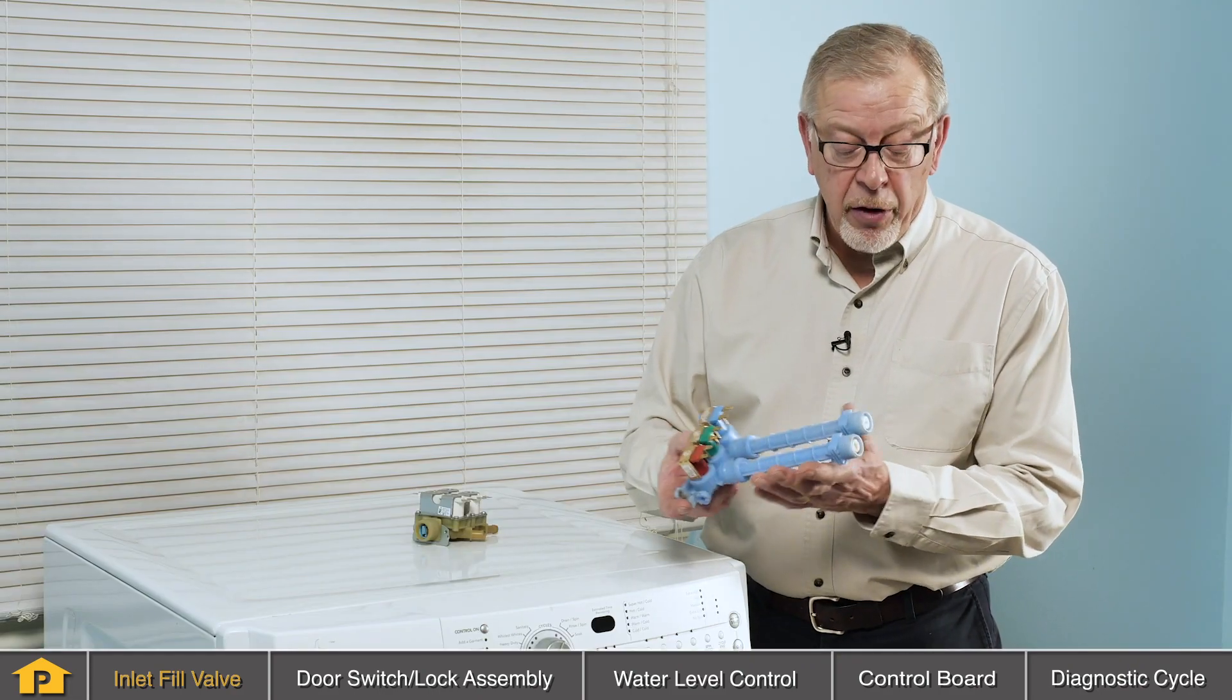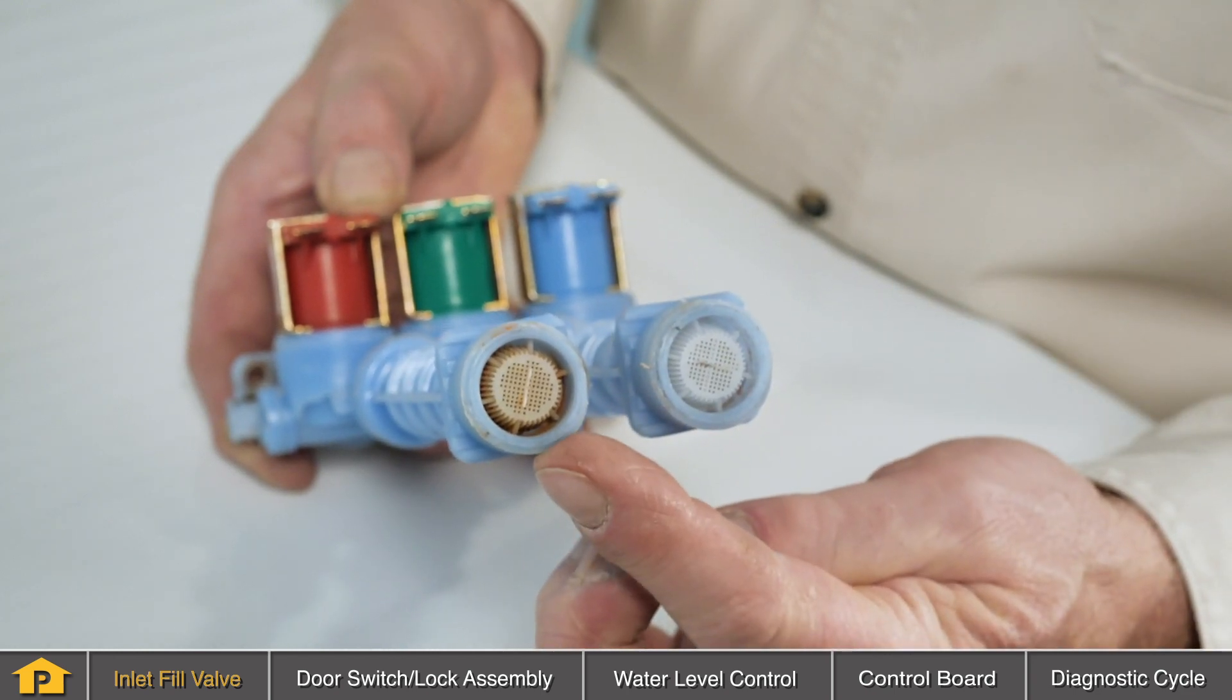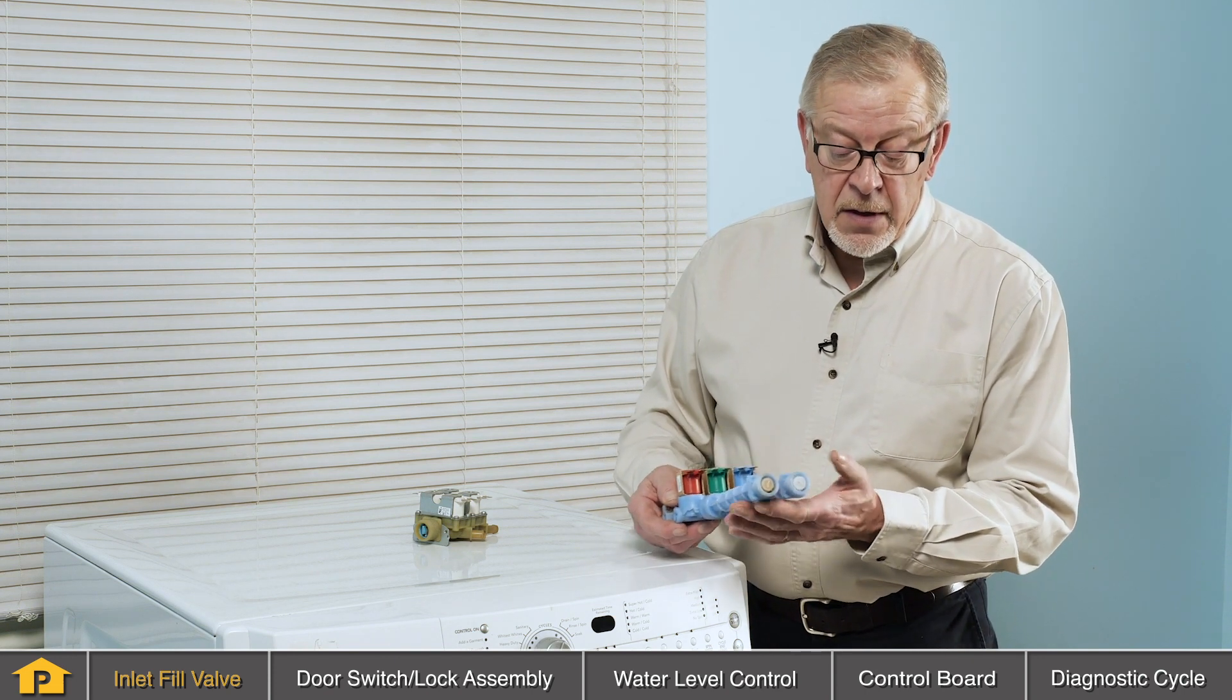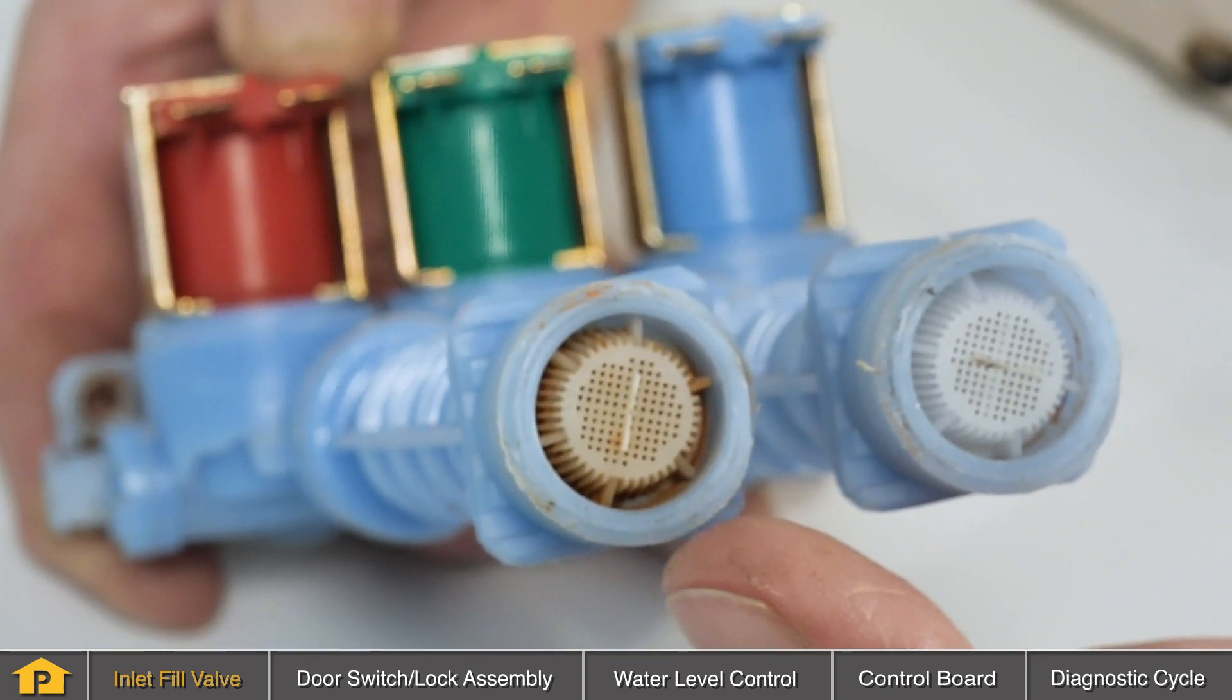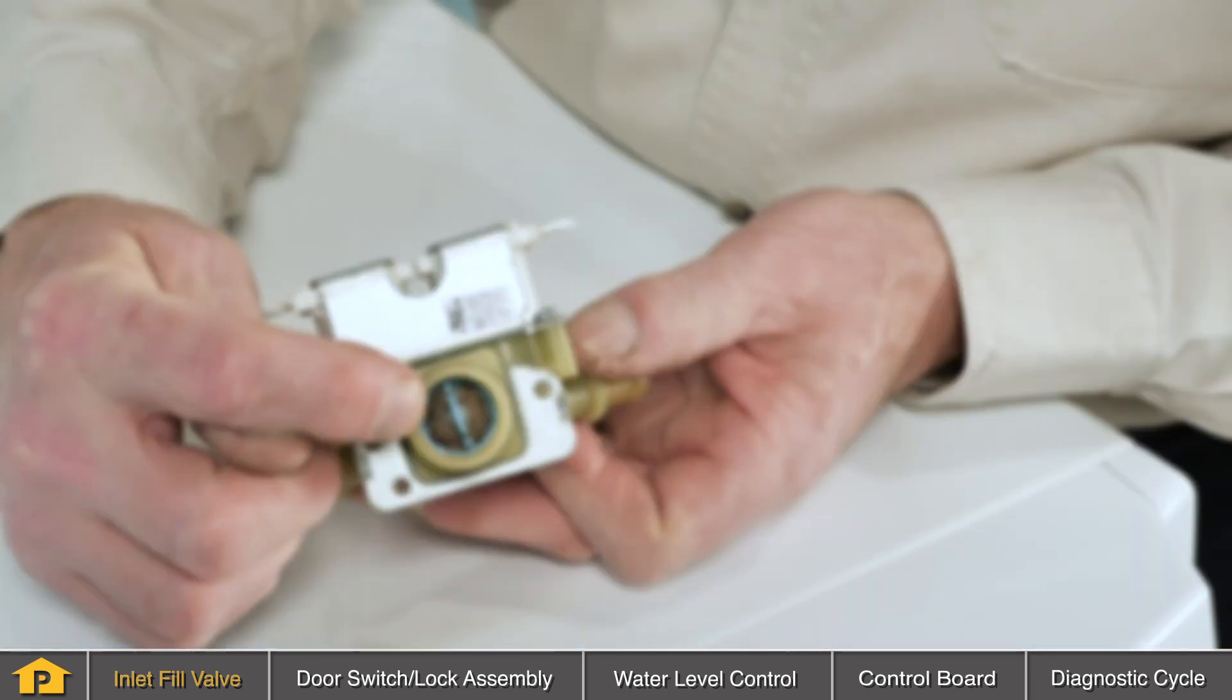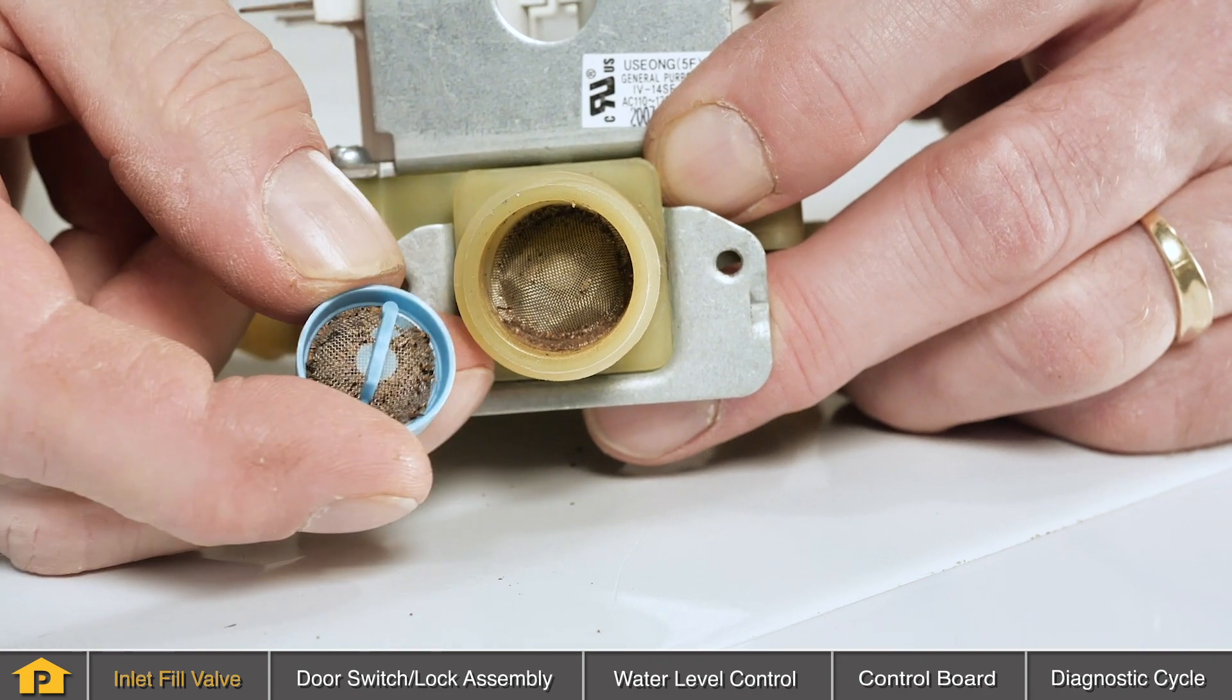The first thing to check on your inlet water valve would be the inlet screens. Verify that they are still intact and inspect them for any signs of trash that may have built up in them. A plugged screen may not allow any water into the valve or very little at all. Remove the hoses, check the screens, you can pull them out typically and clean them, but always remember to put them back in place. If they're damaged, you'll need to replace the whole valve. The same applies for either style of valve. Check the screens first, make sure they're clean.